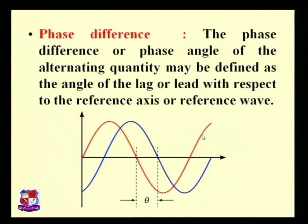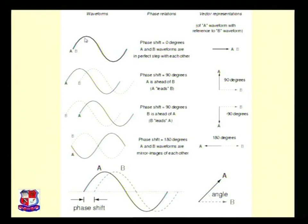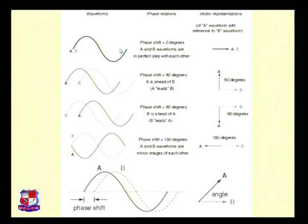This is known as the phase difference. Using one simple figure we find out what is the phase difference. In the first figure, signals A and B are overlapping each other, appearing as a dark line, because the phase shift or phase difference is zero degrees. Both signals are in the same direction, so there is no phase difference — both signals are lying on top of each other.